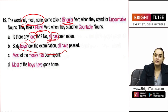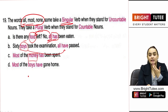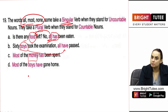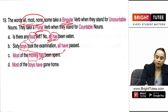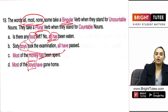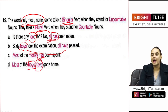Let us look at more examples. 'Most of the money' — money is uncountable, therefore singular verb 'has' has been used. 'Most of the boys' — boys is countable, therefore I have used the plural verb 'have.'